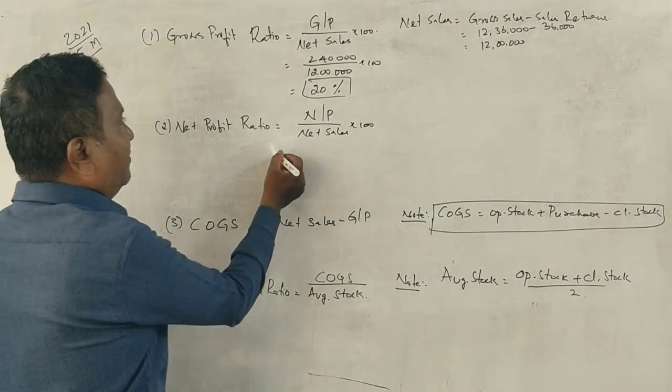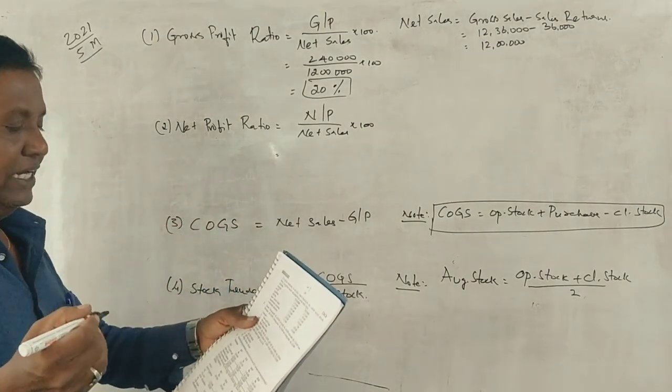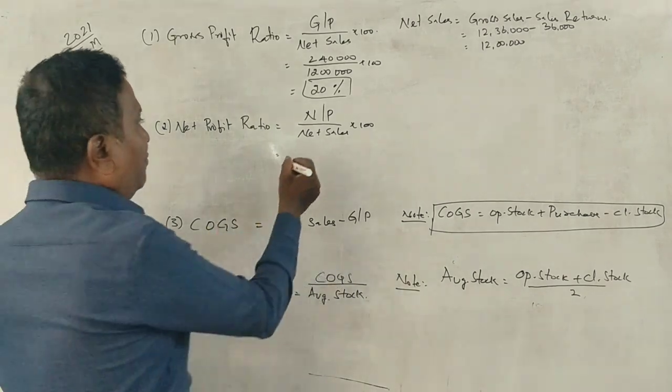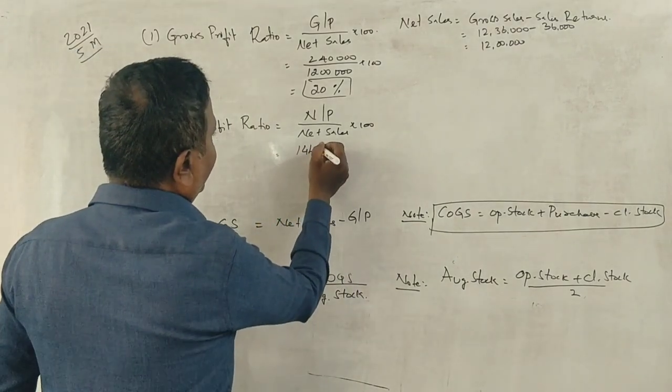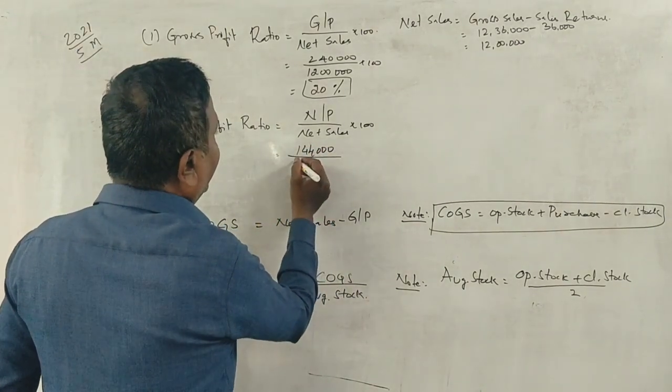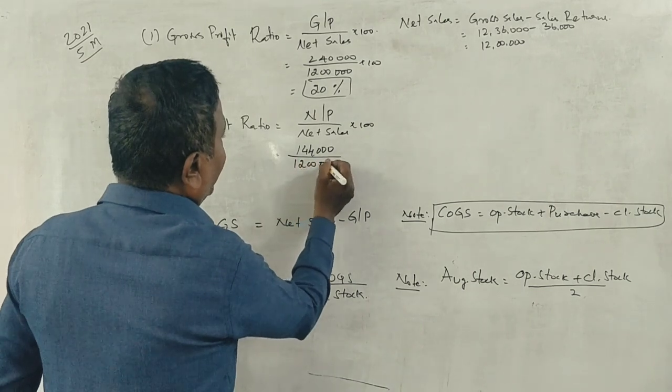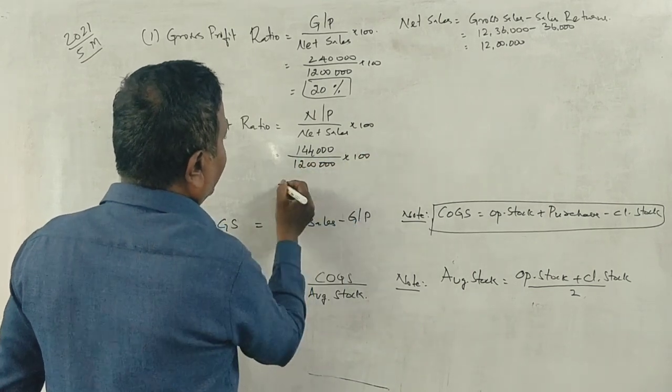Net Profit Ratio: Net Profit is 1,44,000 divided by Net Sales 12,00,000, into 100. That's 12%. Yes, sir.